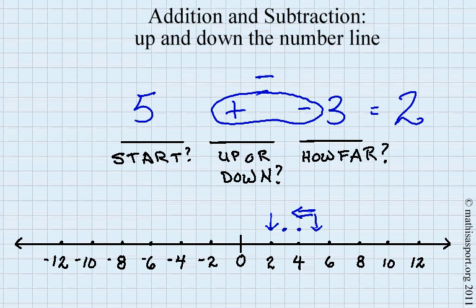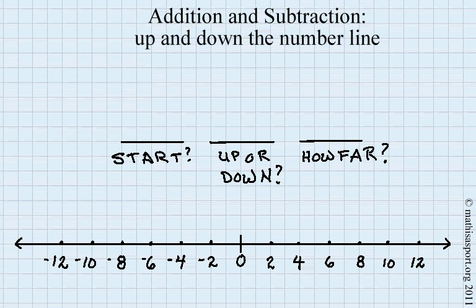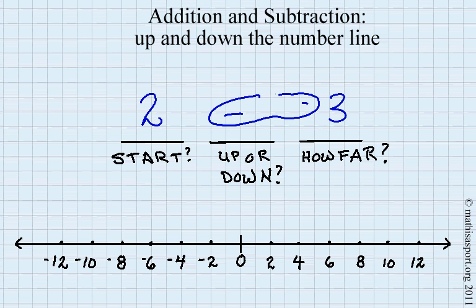Let's try another: 2 minus negative 3. When the minus and the minus are next to each other, this is a plus. So where do we start? We start at 2. Do we go up or down? We're going up because it's a plus. How far do we go? 1, 2, 3. Our answer is 5.